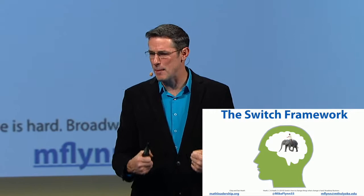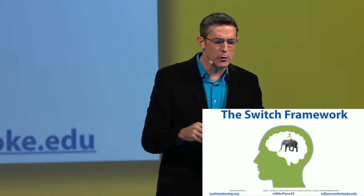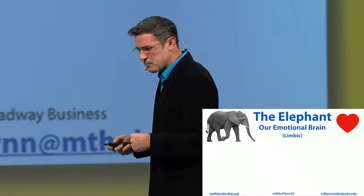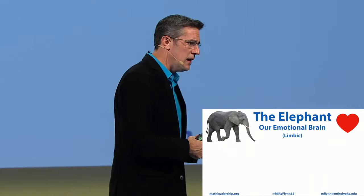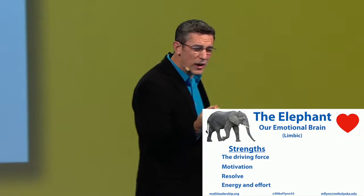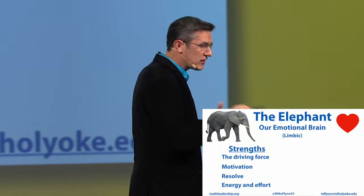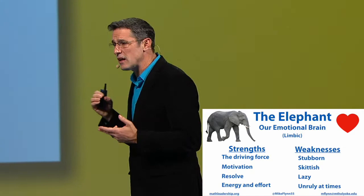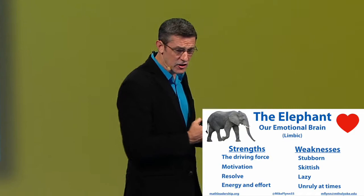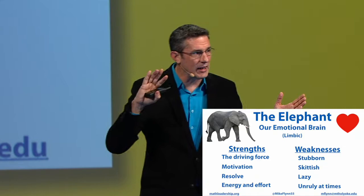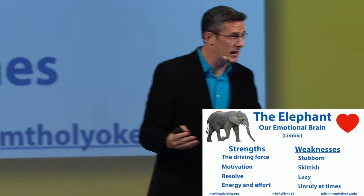They say our brains have two minds — two parts that govern our behavior. One of them is an elephant, and the other is the rider that sits on top of the elephant. The elephant is the emotional part of our brain — it's the limbic system, where our decisions and feelings come from. The strengths of our emotional part of the brain: it gives us drive, motivation, resolve, and energy. Anytime you've felt empowered to do something, it's because your elephant's been woken up. But it also has weaknesses — the elephant can be stubborn, dig its heels in, be frightened, skittish, lazy, and even unruly.